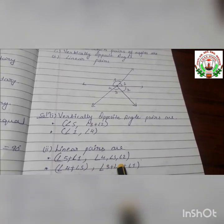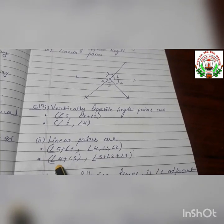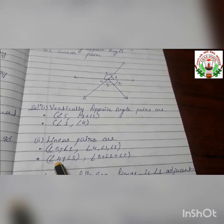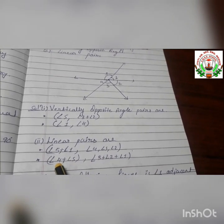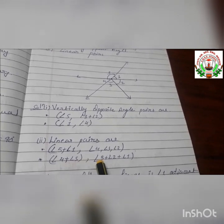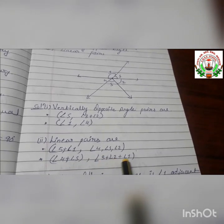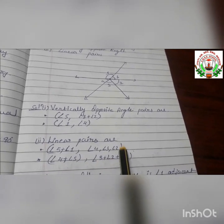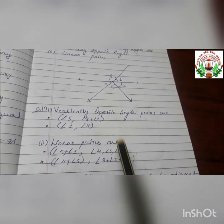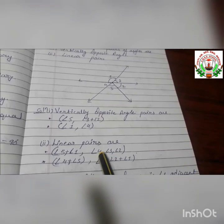The second linear pair is angle 4 plus angle 3 plus angle 2. Then another linear pair is angle 4 and angle 5, and also angle 3 plus angle 2 plus angle 1. These are the linear pairs of angles.